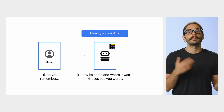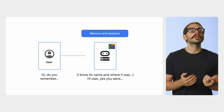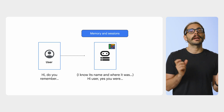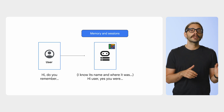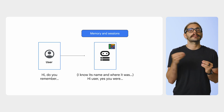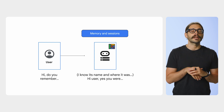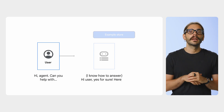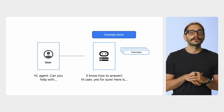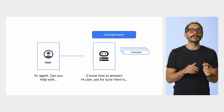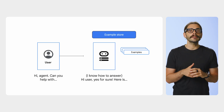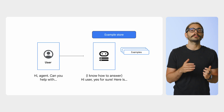Great agents need to manage context effectively. Sessions and Memory Bank work together to give your agent both short-term and long-term memory. Sessions track the conversation history, and Memory Bank stores key facts to personalize future interactions across multiple sessions. You can also manage context by showing the model exactly how to behave — that's what the Example Store is for. It lets you provide few-shot examples to improve your agent's accuracy and steer its behavior without tuning the model.